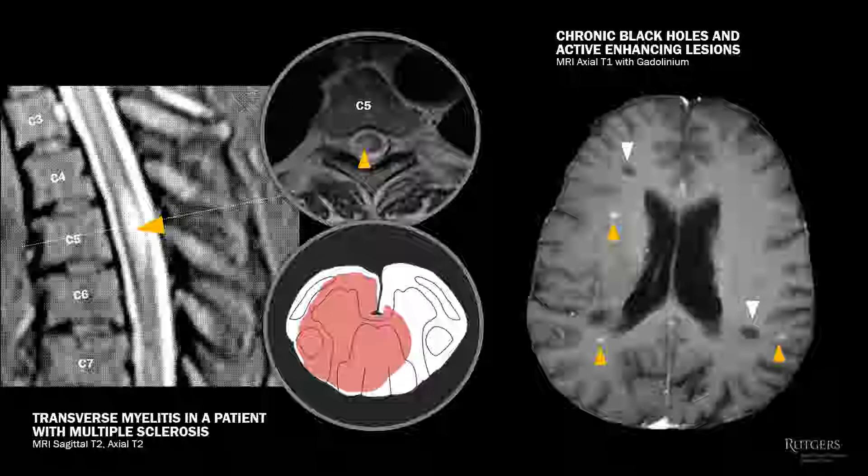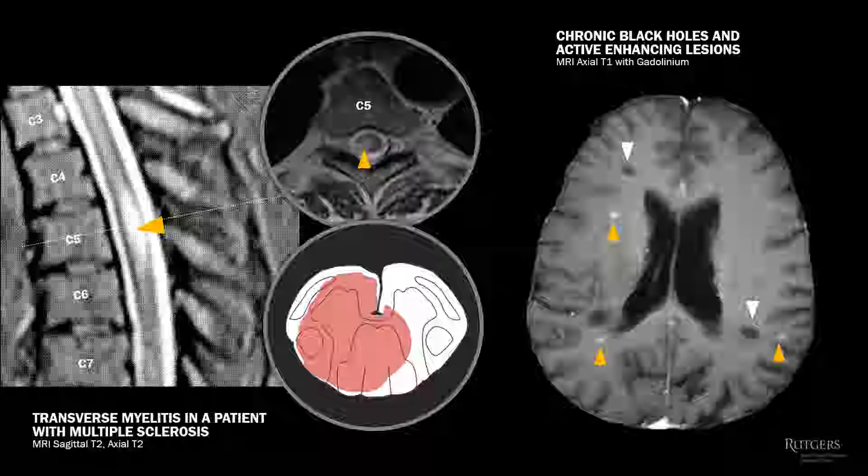Another concept we can review here is dissemination in space. Lesions are located in different parts of the brain, including the periventricular area, the juxtacortical area — which is the interface of gray and white matter — and in the spinal cord.